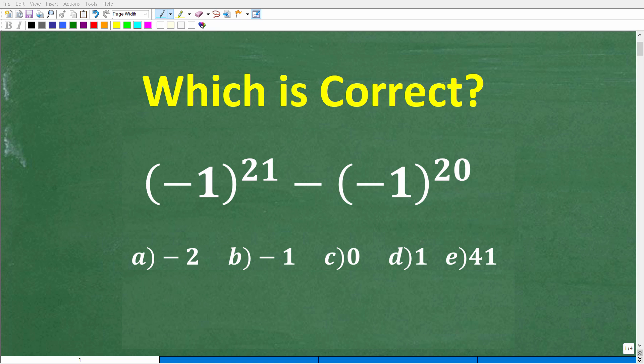Okay, so without using a calculator, can you figure out this basic math problem? This is not that difficult. And here is the question. Basically what we have here is a multiple choice question, which is correct. And here is our answer choices. But let's go and take a look at the actual question. We have negative one to the 21st power minus negative one to the 20th power.